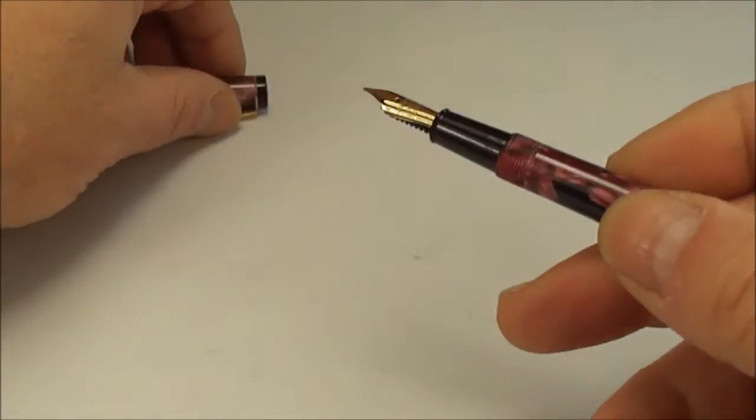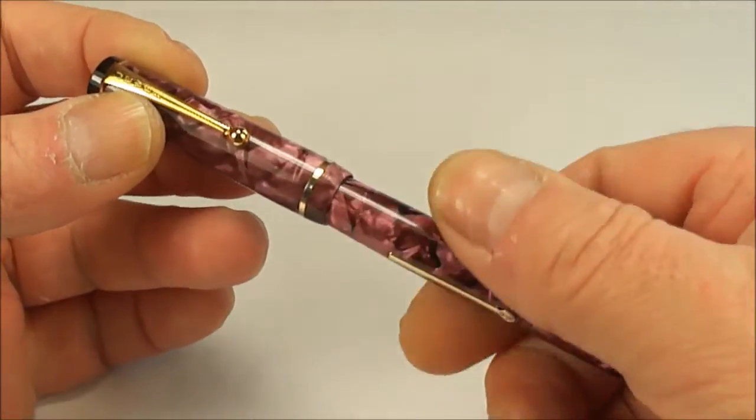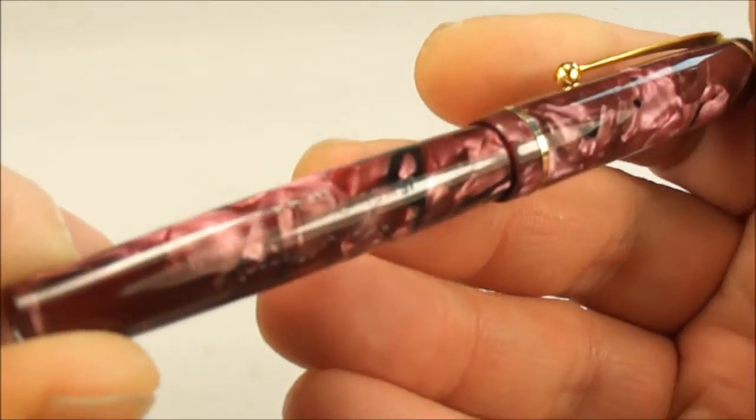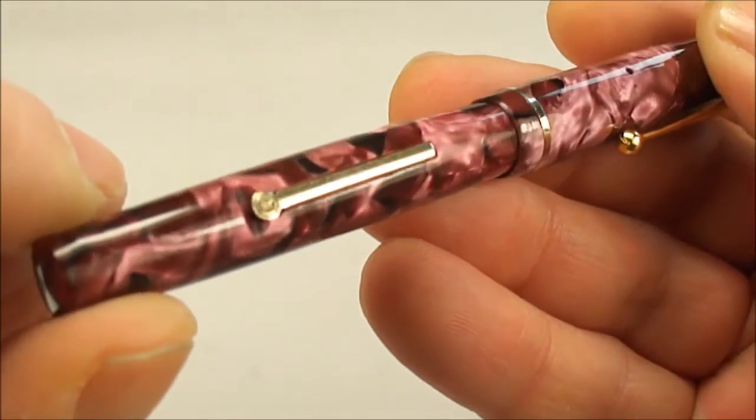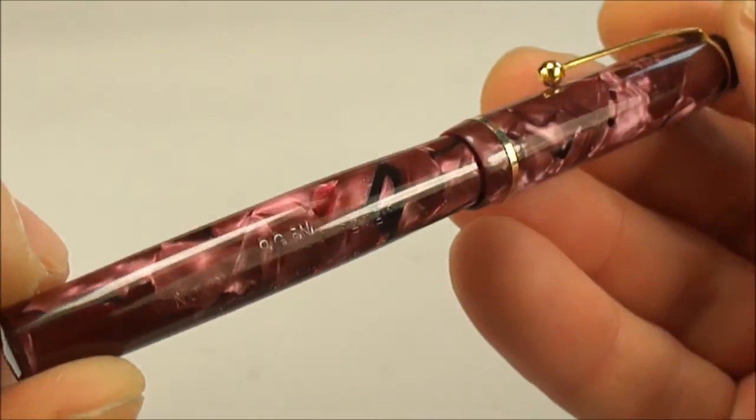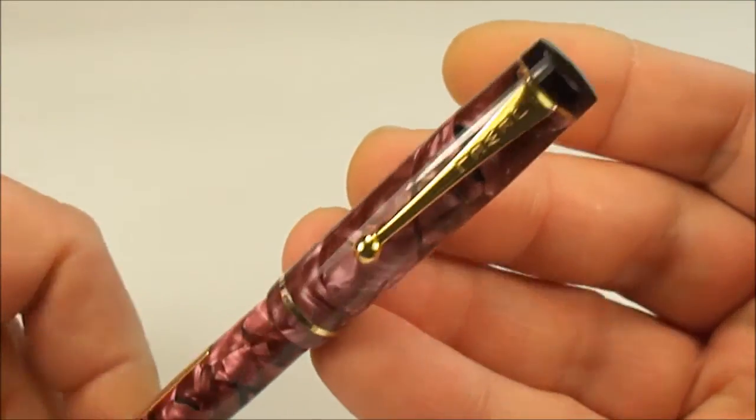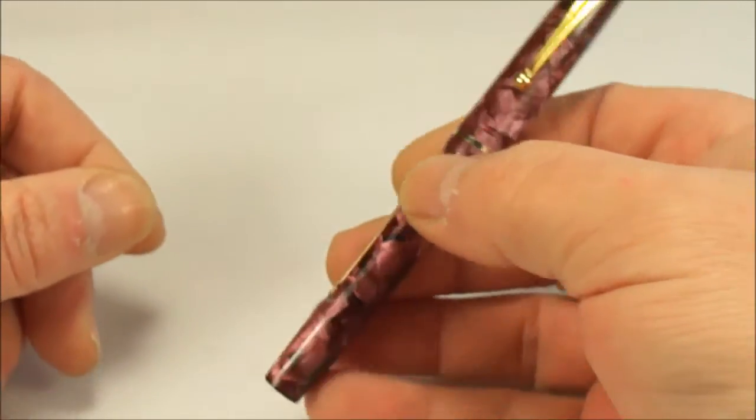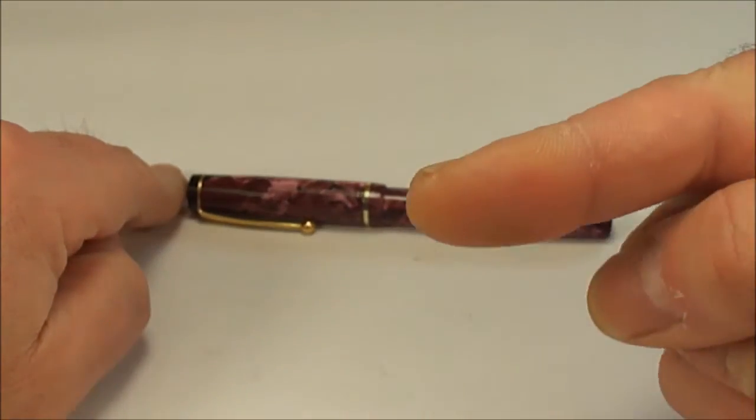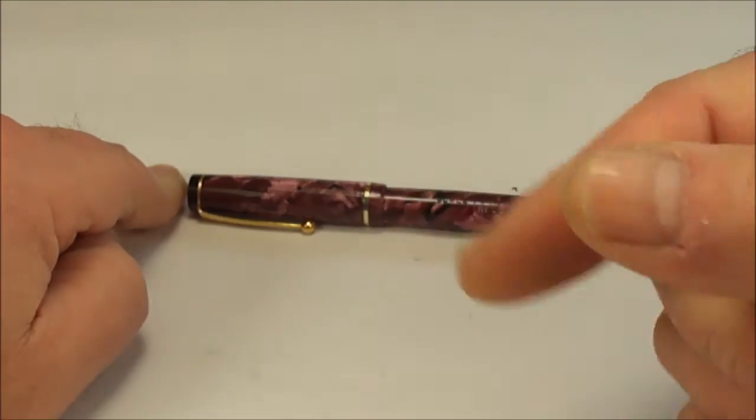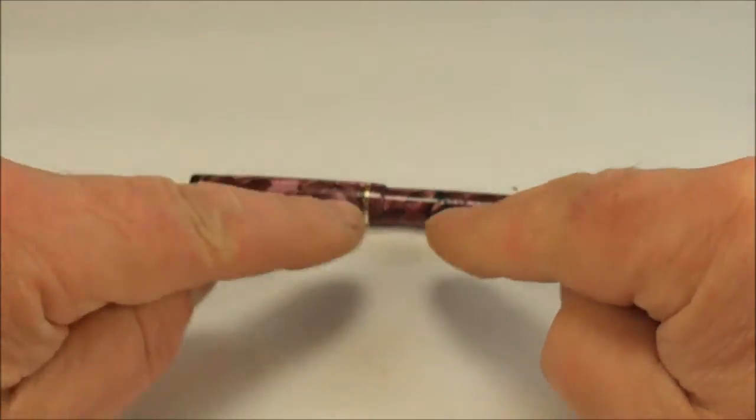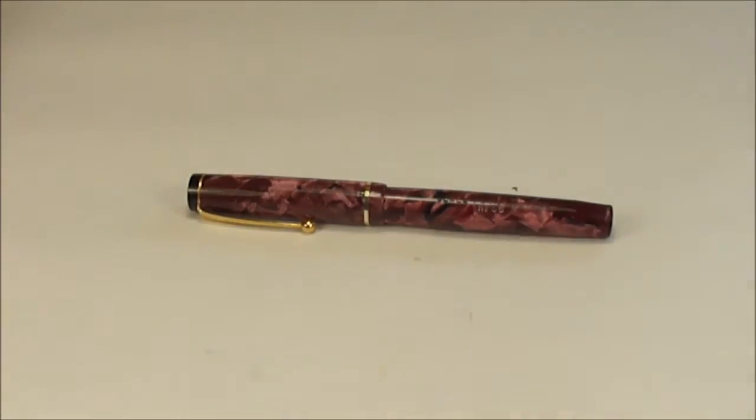So there we have it - that's the Jewel Number 56 fountain pen in this gorgeous mauve with flecks of black marble, absolutely gorgeous, in lovely condition. As always, I hope you've enjoyed looking at this pen as much as I enjoy showing them to you. Don't forget, don't be shy, leave a comment. But for now I'm just going to say bye bye for now.